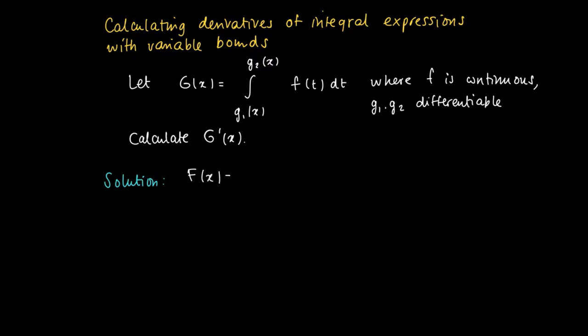the solution is as follows. We may define, since f is a continuous function by virtue of the main theorem of calculus part 1, we may define a primitive like so. So the integral from a to x f of t dt is a primitive of the function f.